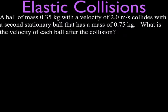This problem says we have a ball that has a mass of 0.35 kilograms and the ball is moving with a velocity of 2.0 meters per second, and it collides with a second ball that is stationary, which means it's not moving, and it has a mass of 0.75 kilograms. We're going to take this to be a perfectly elastic collision, and we want to know what is the velocity of each of the balls after the collision.